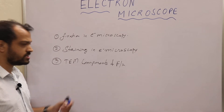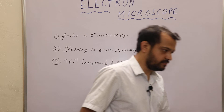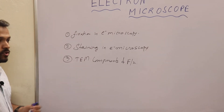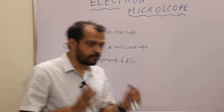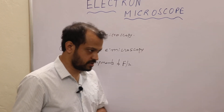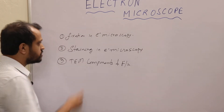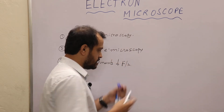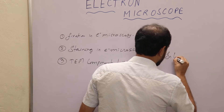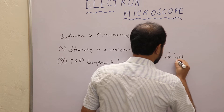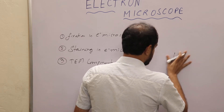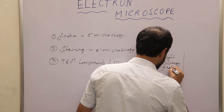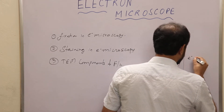So we will start with electron microscopy fixation, then electron microscopy staining, and then TEM and its components and how these components function so that we can get a final image. You should understand that when talking about fixation in electron microscopy, it is completely different with respect to fixation in light microscopy.